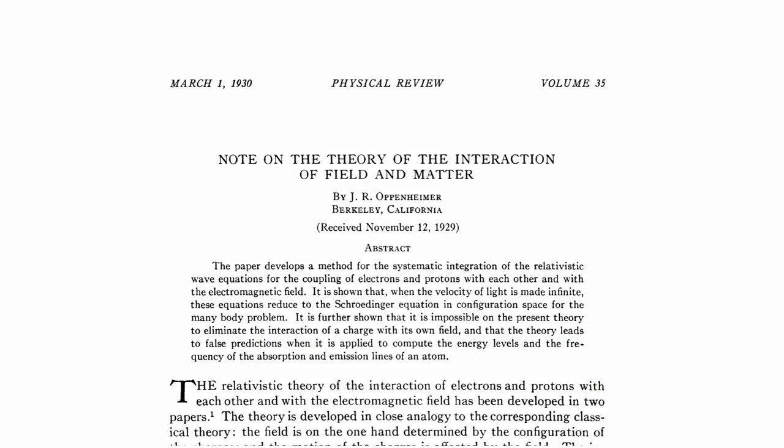Oppenheimer's paper, published in 1930 during the early years of quantum field theory development, was titled Note on the Theory of the Interaction of Field and Matter. His paper develops a method for the systematic integration of the relativistic wave equations for the coupling of electrons and protons with each other and with the electromagnetic field. We have, to some extent, also been doing this in this video series, although using the non-relativistic equation for the electron.